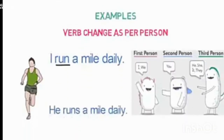Now let's see an example of how the verb changes as per person. When I say 'I run a mile daily,' run is the verb. Similarly, when I change the person of the sentence, it becomes 'He runs a mile daily.' Run becomes runs. This is an example of the verb changing as per person.